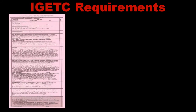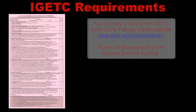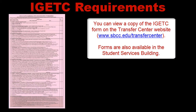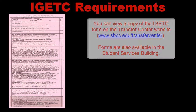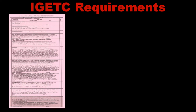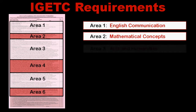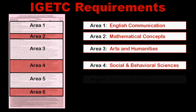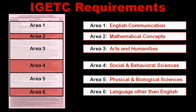Let's take a look at the IGETC form. At SBCC, most students know it simply as the pink sheet. At first glance, it may seem complicated, but once we break it down, you'll find it's an easy document to follow. IGETC is composed of six major areas or categories from which you are required to choose courses.